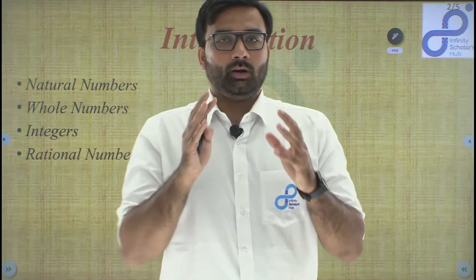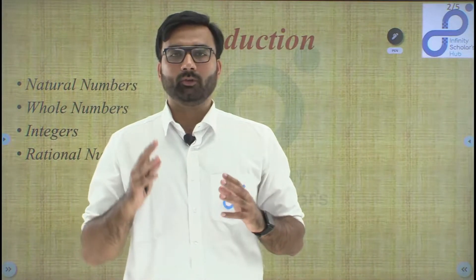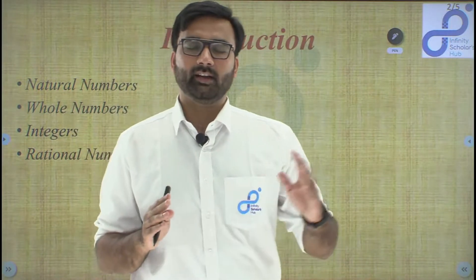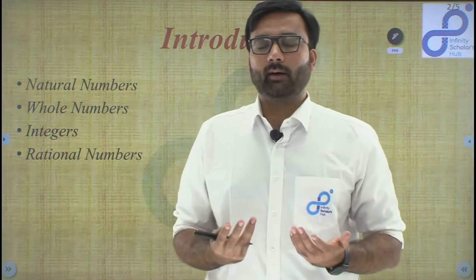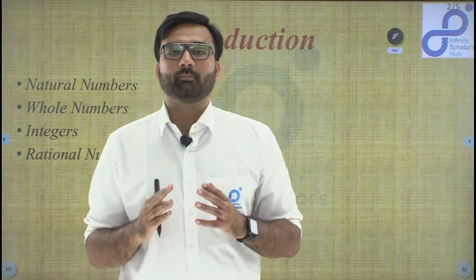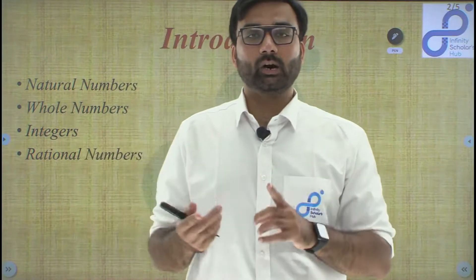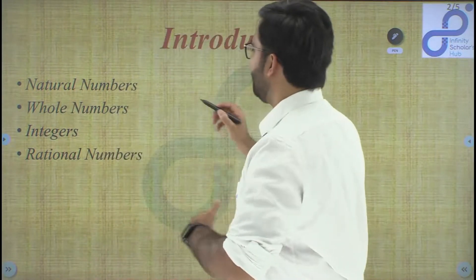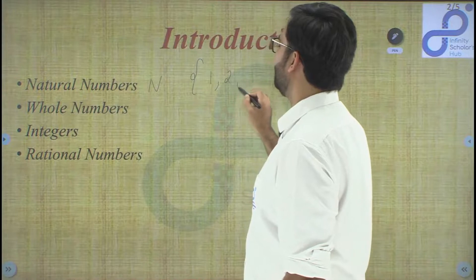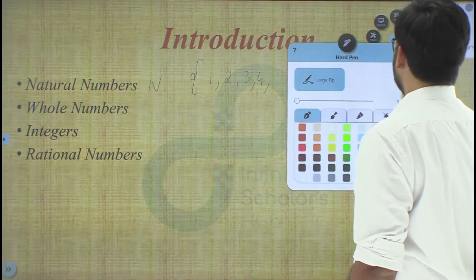Let's say you're sitting in a hall and there are lots of chairs. Someone has told you to count those chairs, so you will count one, two, three, four, five, six, seven, eight and keep going. When we count, we start from one — so natural numbers are also called counting numbers. We denote the set of all natural numbers with a capital N.